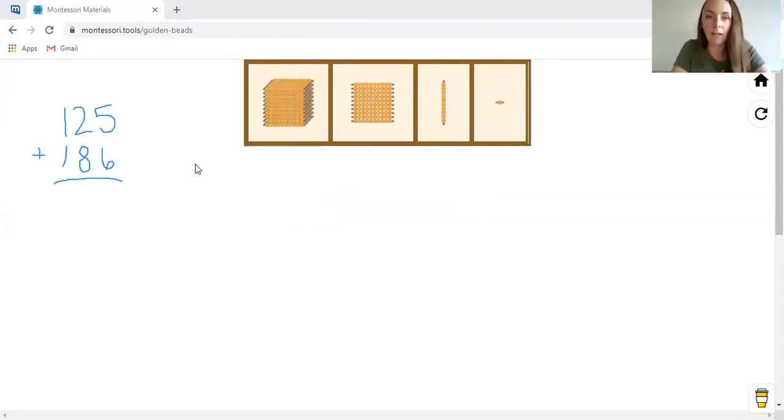So for 125, we're going to need five unit beads: one, two, three, four, five. We're going to need two 10 bars: one, two, and then one hundred square. That gives us 125.